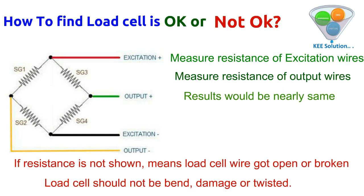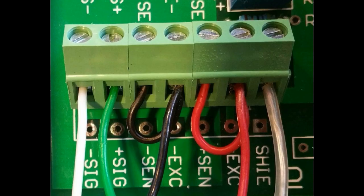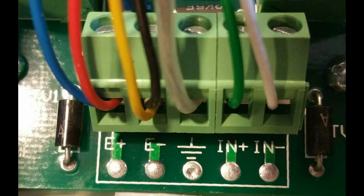Always use a new load cell after checking resistance and all values. Here is an example of a PCB with a six-wire load cell connection showing signal positive, signal negative, sensing negative, sensing positive, excitation negative, excitation positive, and shield wire.